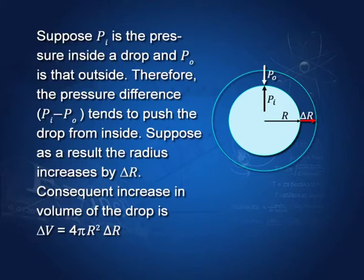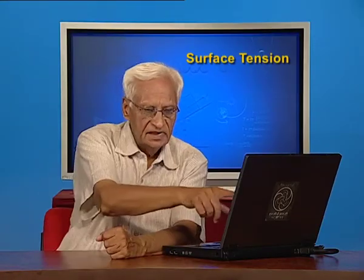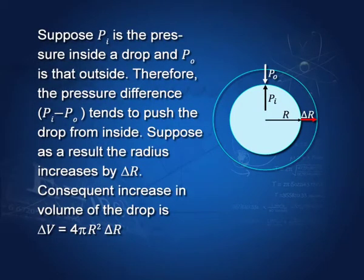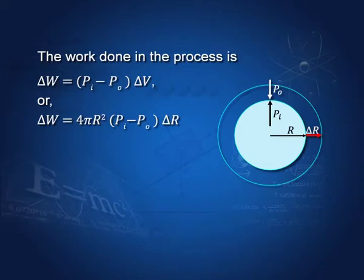Suppose we have a bubble where p_i is the pressure inside, p_o is the pressure outside, and r is the radius. Since the pressure inside is higher, it presses on the surface and tries to expand it. If the expansion takes place by delta r, then the increase in volume is 4πr² δr, and the work done in this process is the pressure difference (p_i − p_o) times δV, giving work done = 4πr² (p_i − p_o) δr.